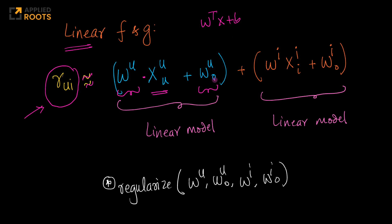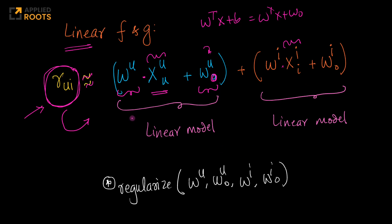I am writing the bias term as w_u0, meaning this is the bias term for the user-level model. Similarly, the item side is a linear model using a dot product. Now the parameters of these linear models are: w_u (a vector), w_u0 (a scalar), w_i (a vector), and w_i0 (a scalar). All of them need to be regularized in a simple linear regression framework.